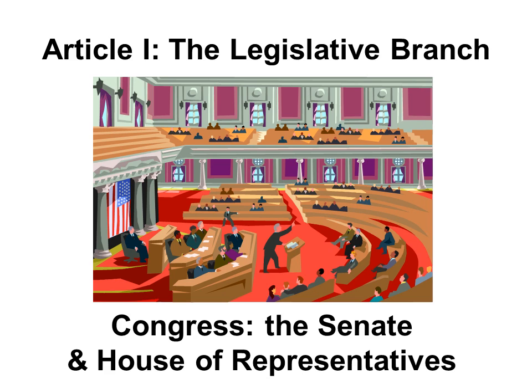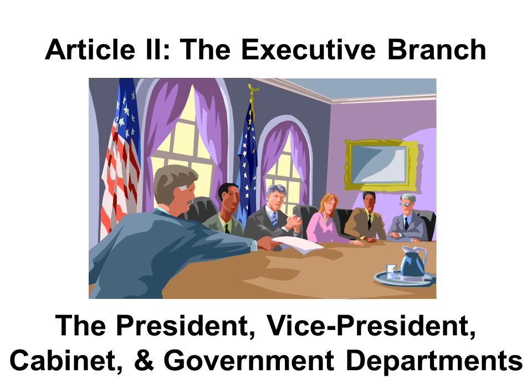Article I of the Constitution talks about the responsibilities of the legislative branch. The legislative branch makes the laws. Congress is made of the Senate and the House of Representatives. Article II talks about the executive branch. The executive branch enforces the law. The executive branch is made of the president, the vice president, the cabinet, and the government departments.